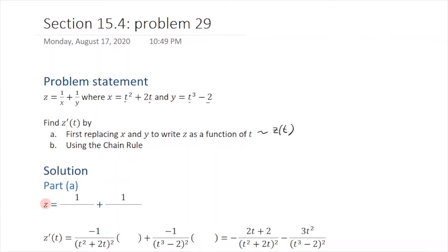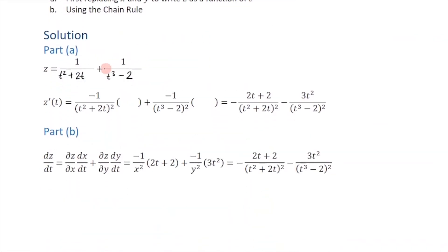In part A, we have z equal to 1 over x, and we plug in t squared plus 2t. Then we have 1 over y, which is t cubed minus 2. Differentiating, I got negative 1 over the square of that term times its derivative, plus negative 1 over the square of the other term. We get 3t squared as the derivative of t cubed minus 2. Then I rewrote it more cleanly, pulling out the negative and bringing terms to the numerator.